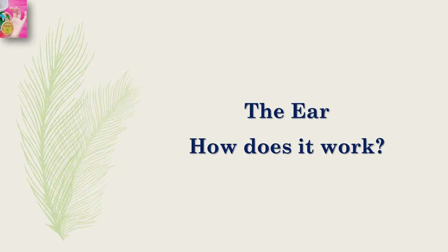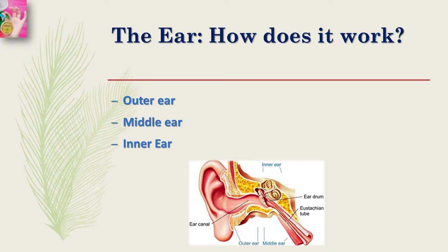The ear - how does it work? What is the ear? If you listen to anything, it is the sound that goes to your ears and you can understand it. There are three parts of the ear: one is the outer ear, one is the middle ear, and one is the inner ear.